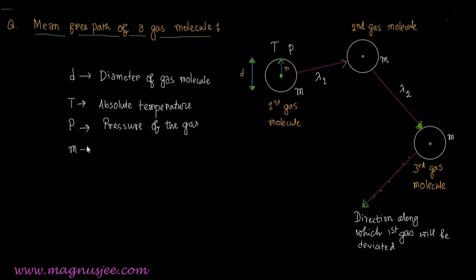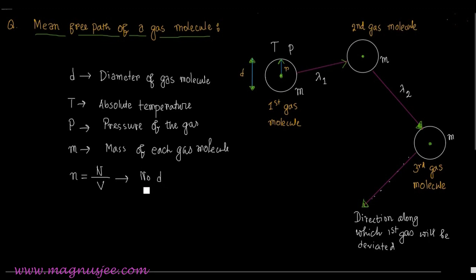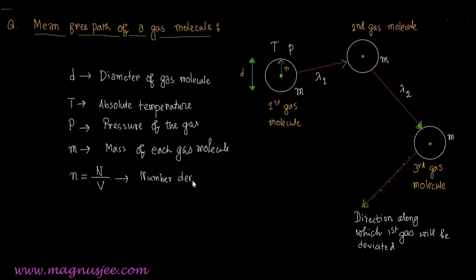M is the mass of each gas molecule. Small n is the number density of gas molecules — that is, the total number of gas molecules divided by the volume of the gas: n = N/V. Small n is the number of gas molecules per unit volume of the gas.